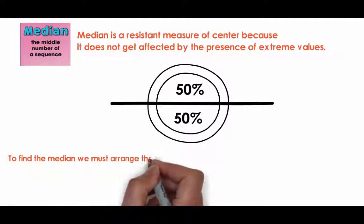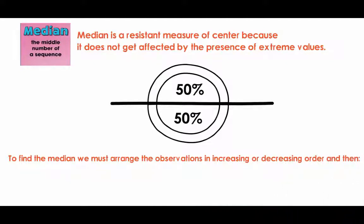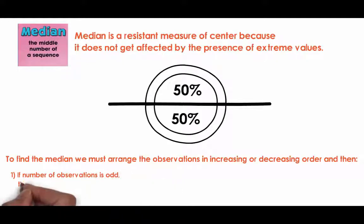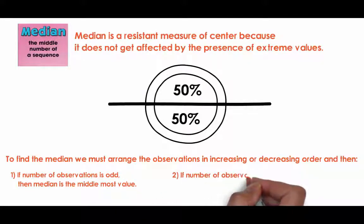To find the median we must arrange the observations in the ascending or the decreasing order. If number of observations is odd, then the median is the middlemost value. If the number of observations is even, then the median is the mean of the two middle numbers.